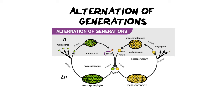Now we're going to look at the alternation of generations. This is when you move from a diploid sporophyte to a haploid gametophyte. In angiosperms this is quite difficult to see because they're not two separate plants or two separate structures like they are in moss and ferns. In gymnosperms and angiosperms it's a little harder to see, but if you understand either the gymnosperm or the angiosperm, it's very easy to use the explanation for either of these plant groups.